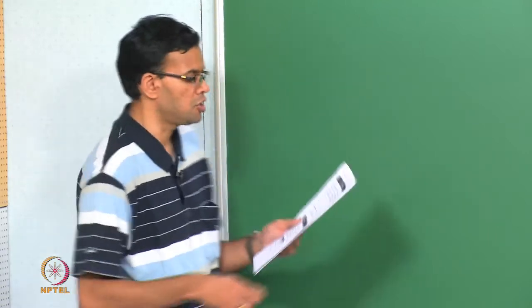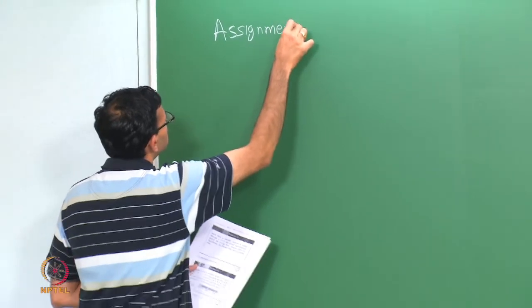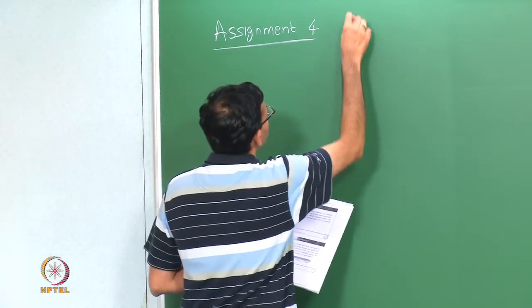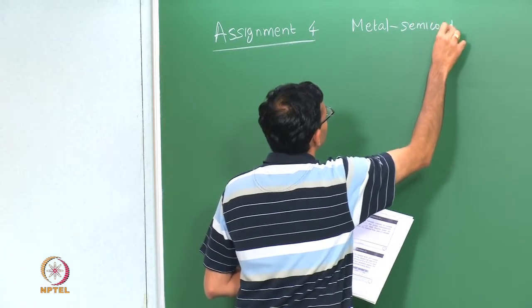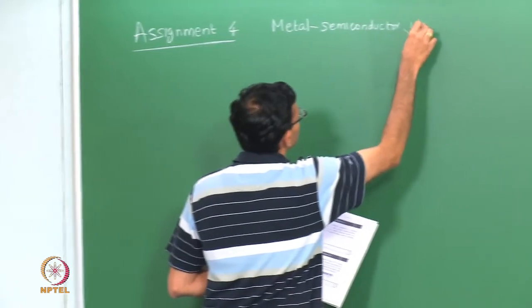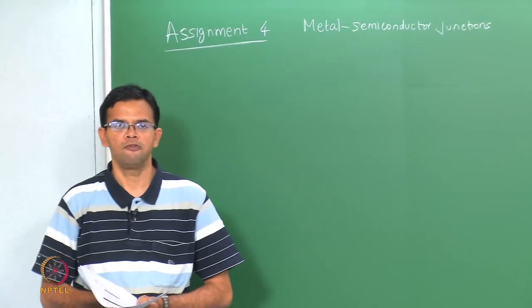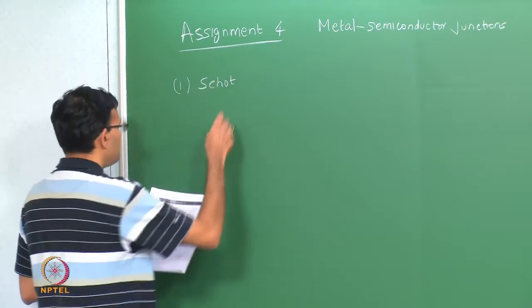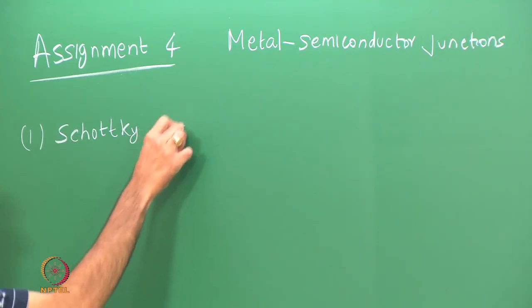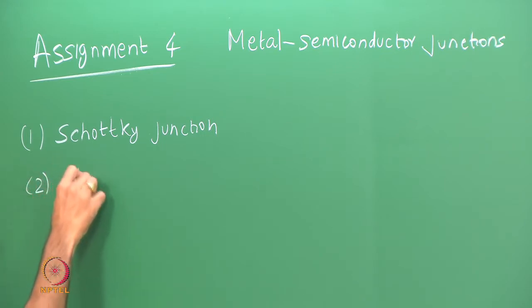In today's assignment, we are going to look at metal-semiconductor junctions. This is assignment 4. In class, we looked at two kinds of metal-semiconductor junctions: one was the Schottky junction or the Schottky contact, and the other was the ohmic junction or an ohmic contact.